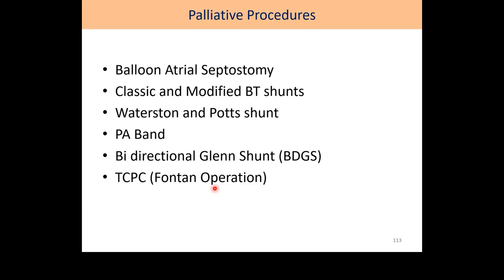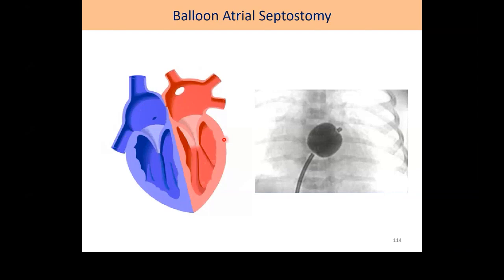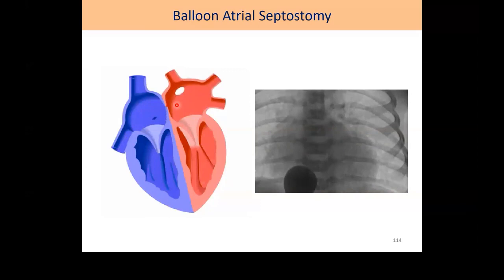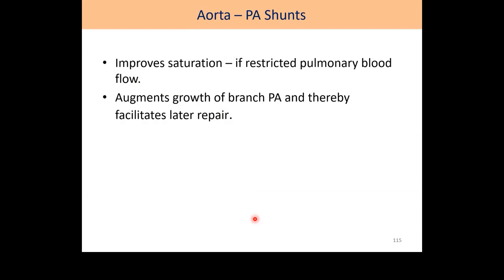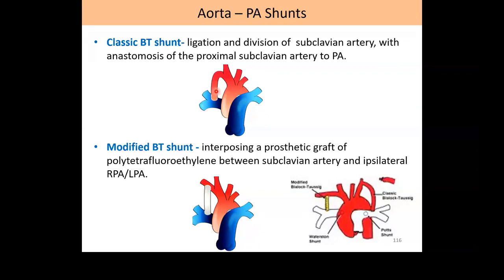Palliative procedures: balloon atrial septostomy is done for TGA when the baby is very blue and there is insufficient mixing — the foramen ovale is enlarged in the cath lab to allow saturated blood to cross and improve saturation. Aortopulmonary shunts (BT shunts): classically the subclavian artery was cut and connected to the pulmonary artery to increase pulmonary blood flow and improve saturation. However, this sacrificed the right upper limb circulation, and some children had ischemia or limb growth abnormalities, which led to modification of this technique.